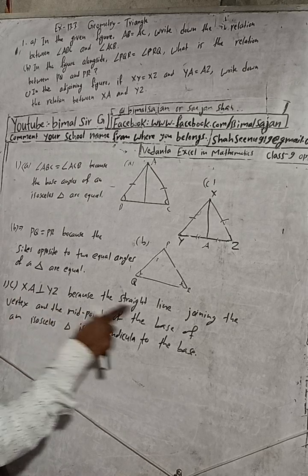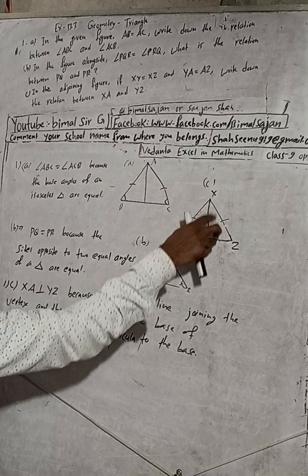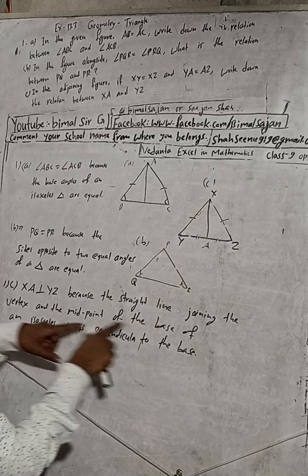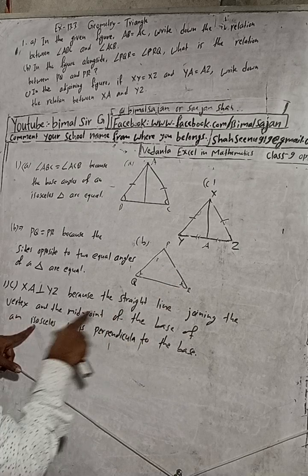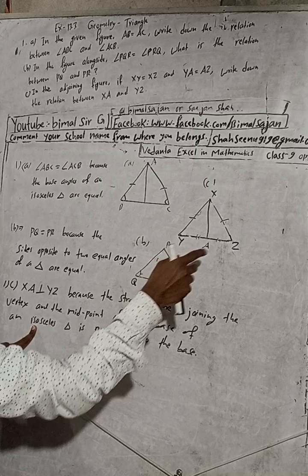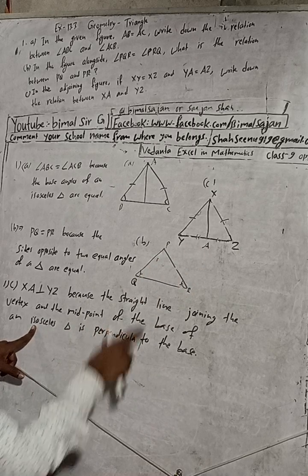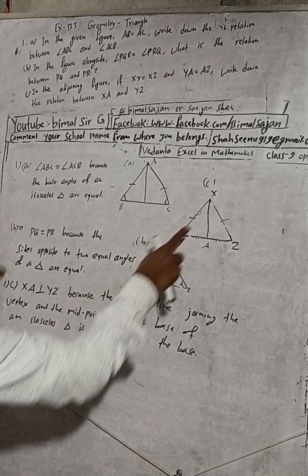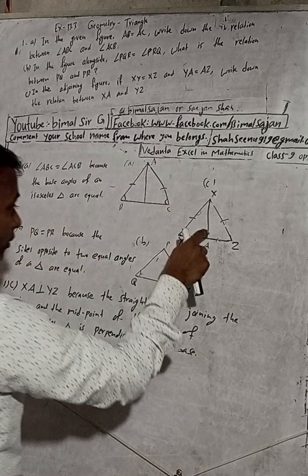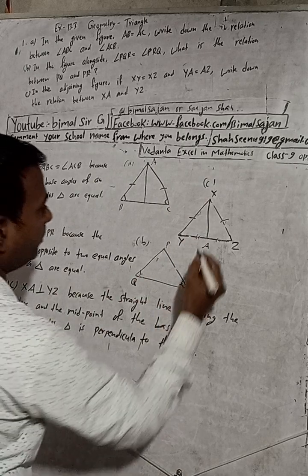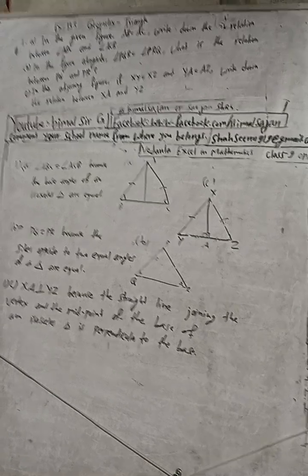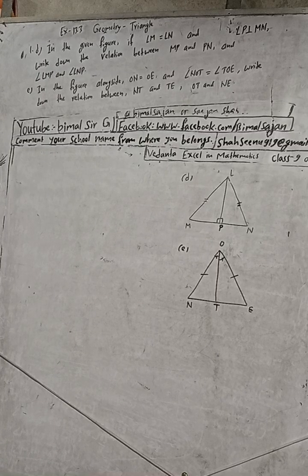Because the straight line joining the vertex and the midpoint of the base of an isosceles triangle is perpendicular to the base.